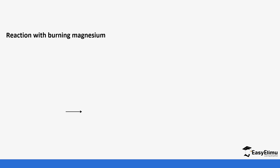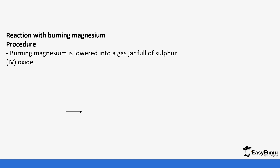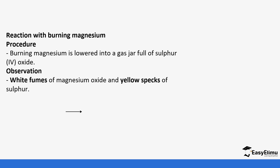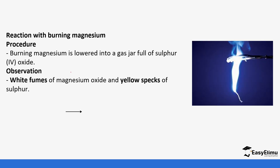Another reaction where sulfur dioxide acts as an oxidizing agent is with burning magnesium. When you lower burning magnesium into a jar full of sulfur dioxide, it burns very brightly in a white flame. Magnesium has a higher tendency of producing a lot of heat, so this reaction is exothermic — it burns very brightly to form white fumes of magnesium oxide (MgO), and yellow specks of sulfur are also deposited.